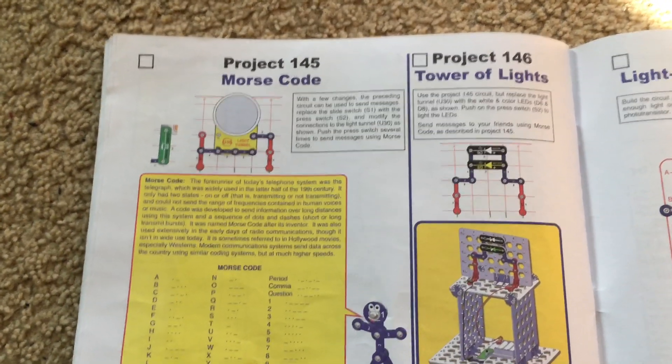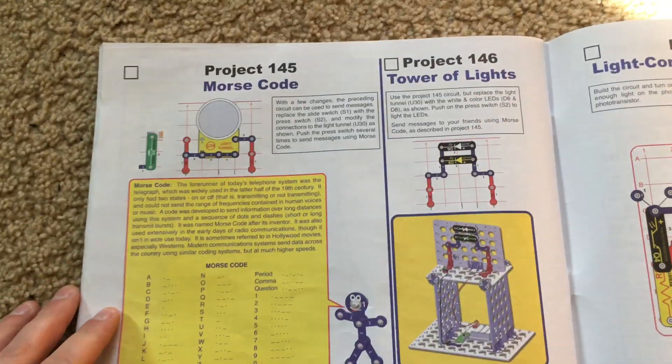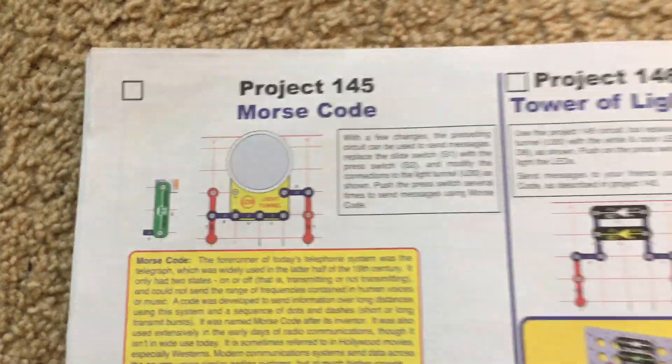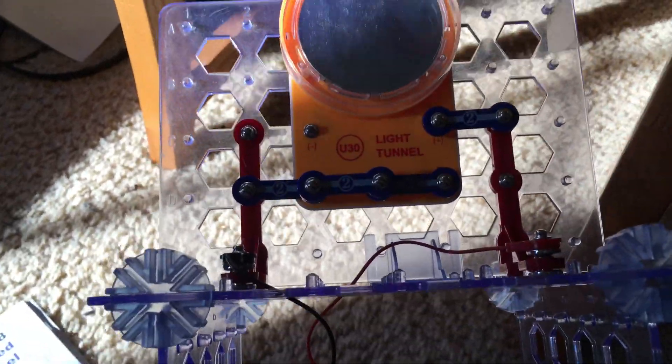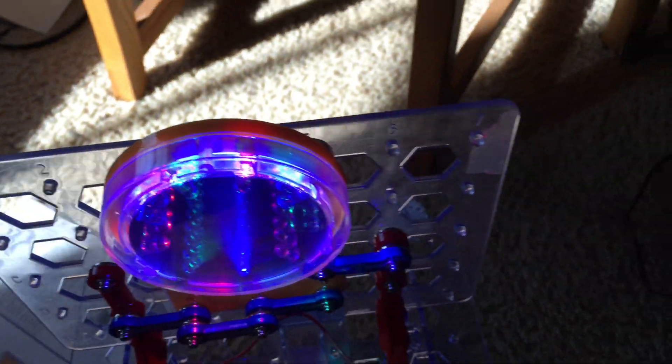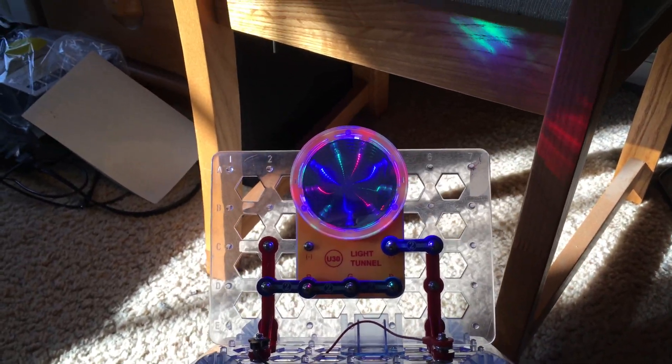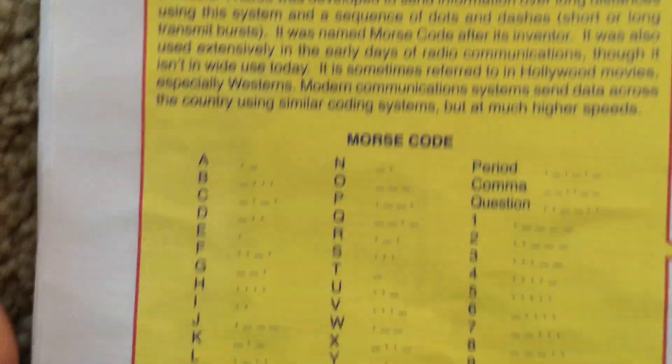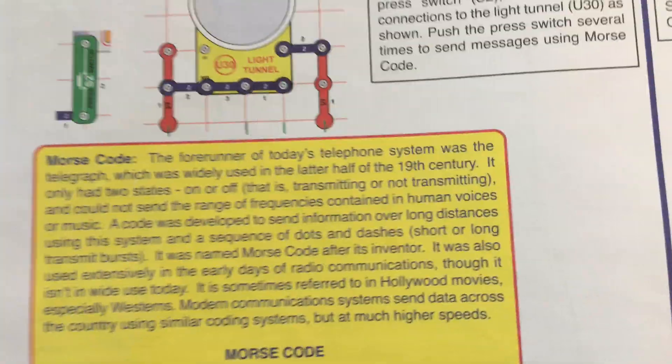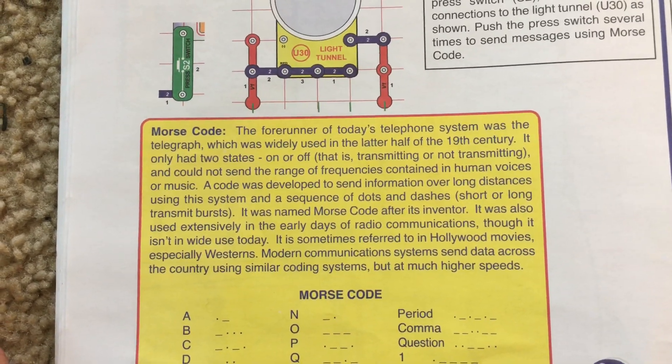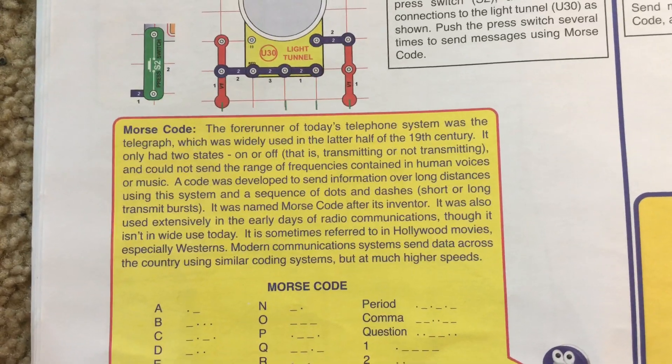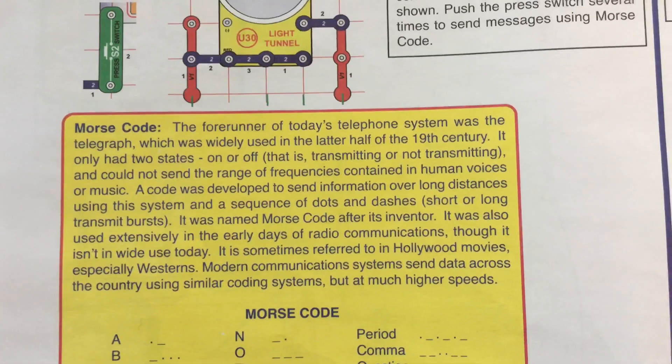Project 145, Morse code. Using the circuit from the previous project, we will make some modifications. For instance, we will replace the slide switch with the press switch and modify the connections to the light tunnel. When we hold down the press switch, the light tunnel will be on. When we release the press switch, the light tunnel will go off. The purpose of this circuit is to learn how Morse code is used. Morse code was one of the earliest forms of communication and was the predecessor to the telephone. It only has two states, on or off.